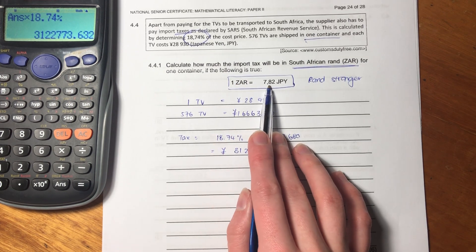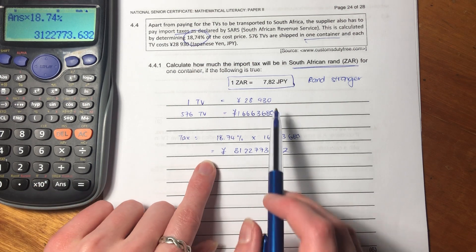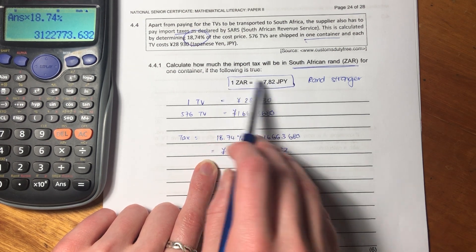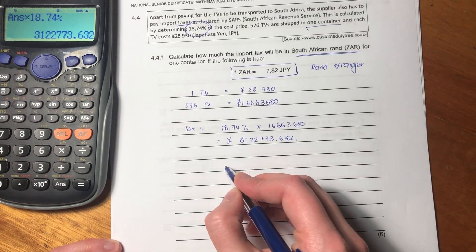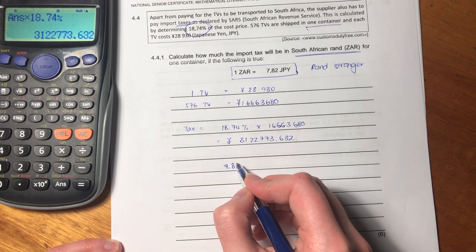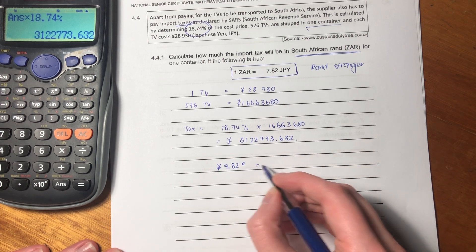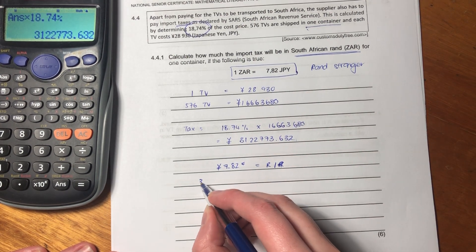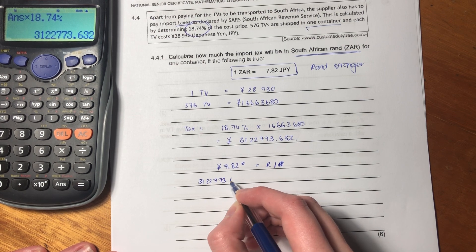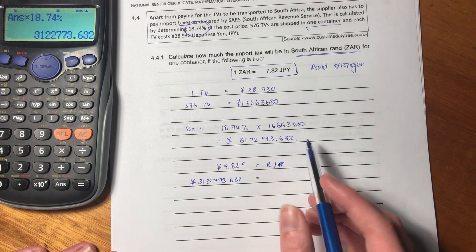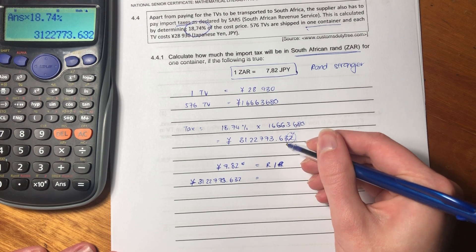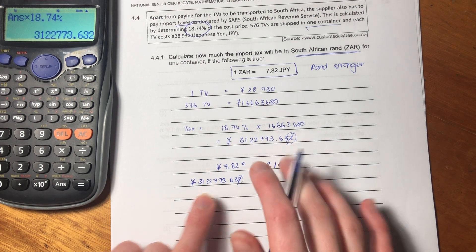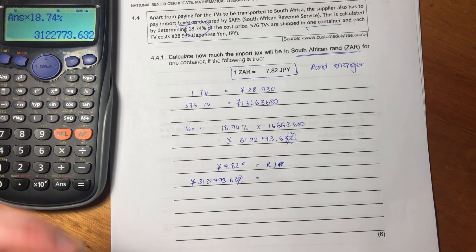So we know that this is how many yen we would have to pay when it comes to the tax, the import tax. But we want that in rands. So we know that one rand equals 7.82 Japanese yen. So what's important here is that we know that if we have an amount of yen, it will be fewer rands than it is yen, because we can see that from the exchange rate. It's literally what it tells us in the exchange rate. So we know that 7.82 Japanese yen equals one rand. Oh, I don't know why I keep putting the currency sign afterwards. Oh, it's because they do it up there. That's why.